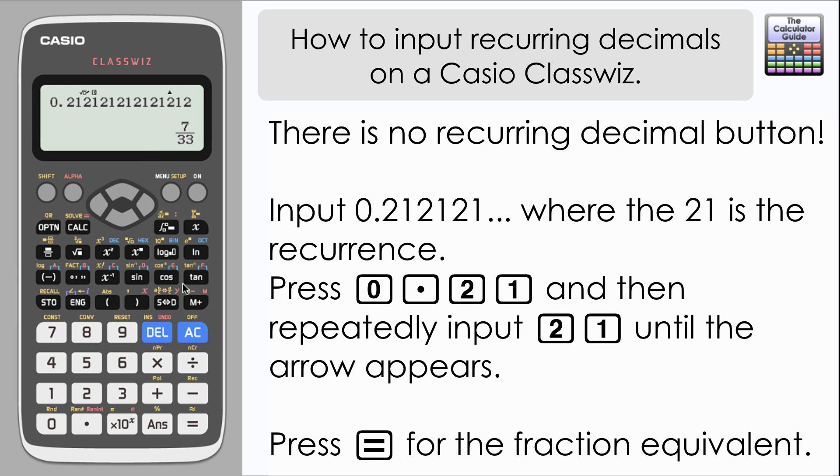So it's recognized it as the recurring decimal 0.21 recurring. Again, if you press SD, it just gives a decimal approximation—it doesn't display it as a recurring decimal as with previous models.